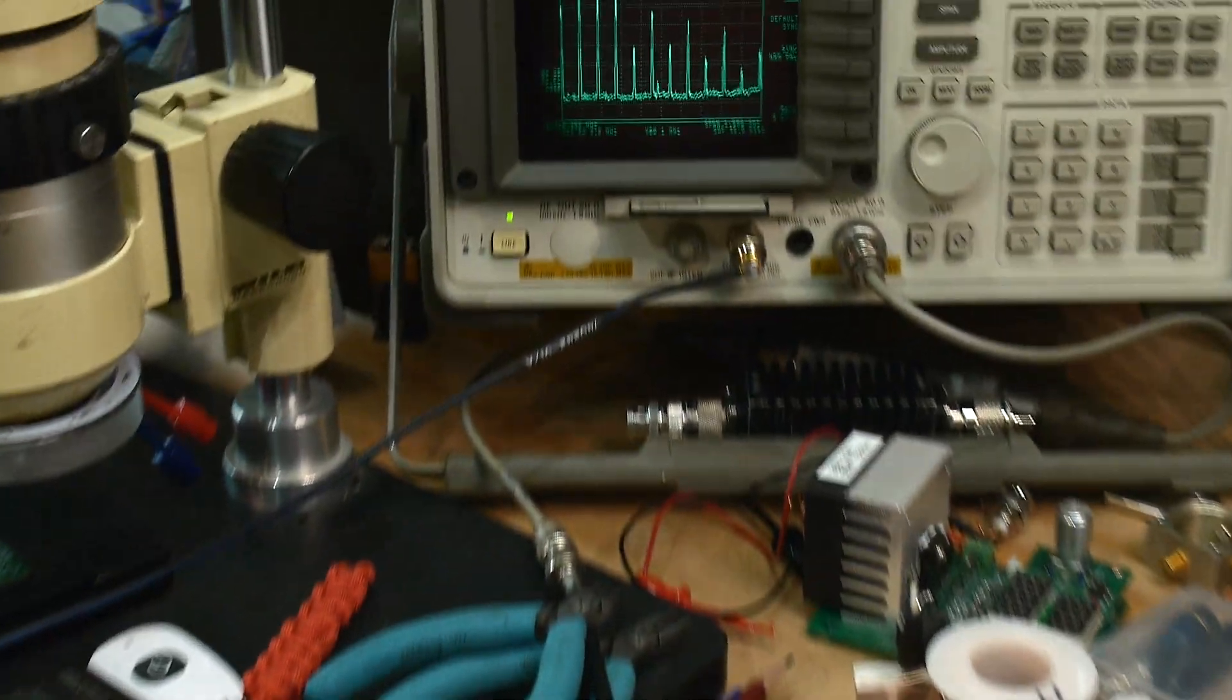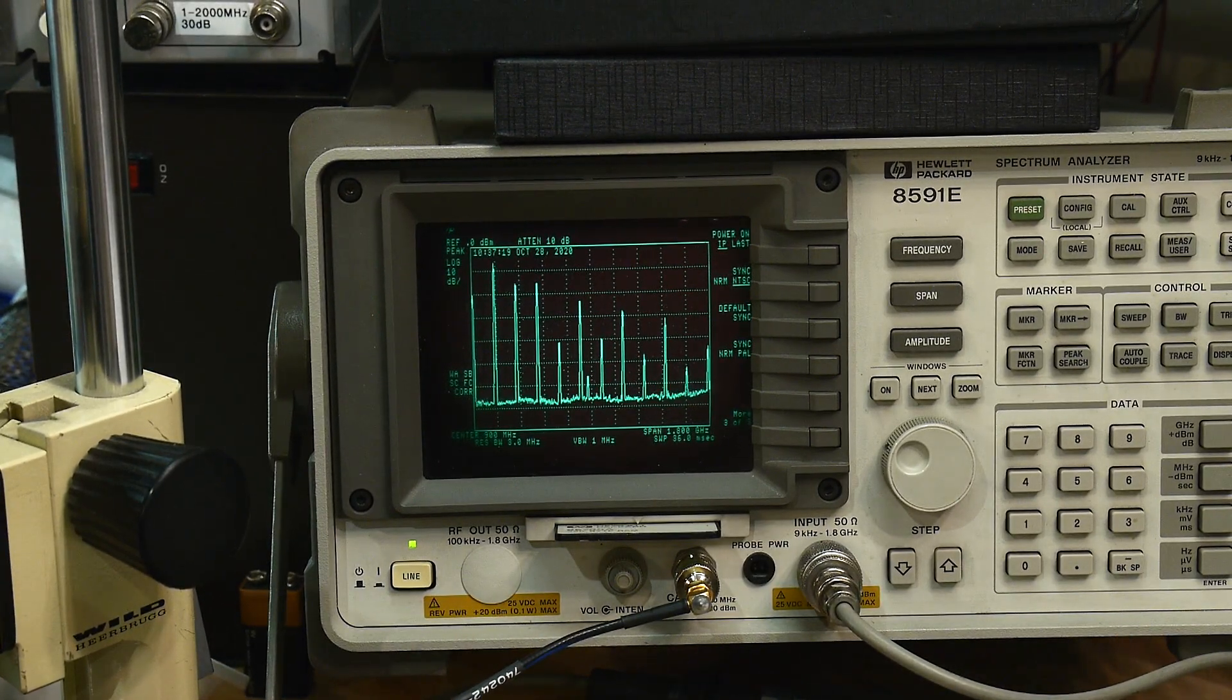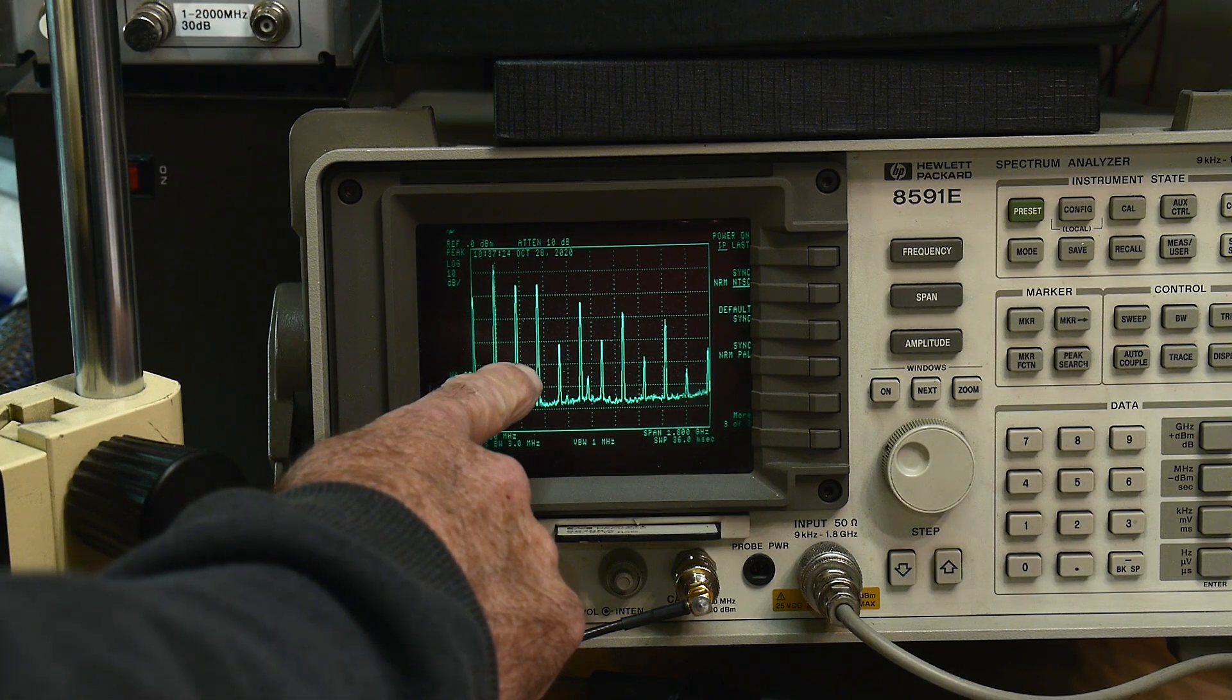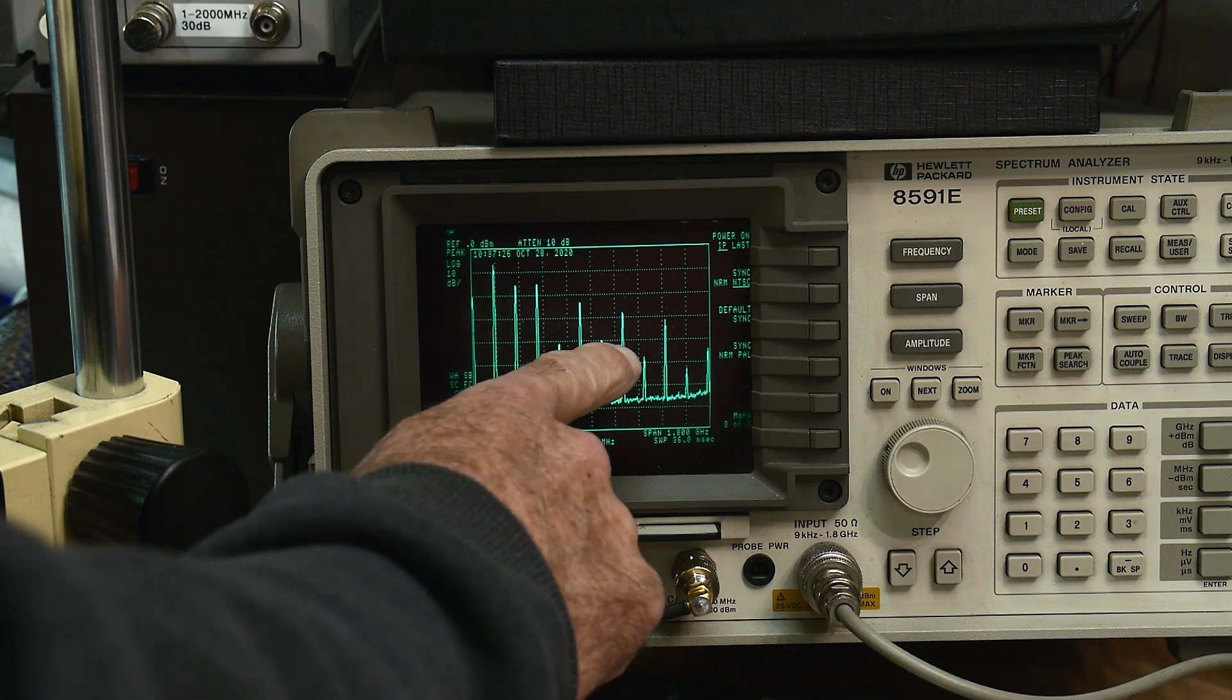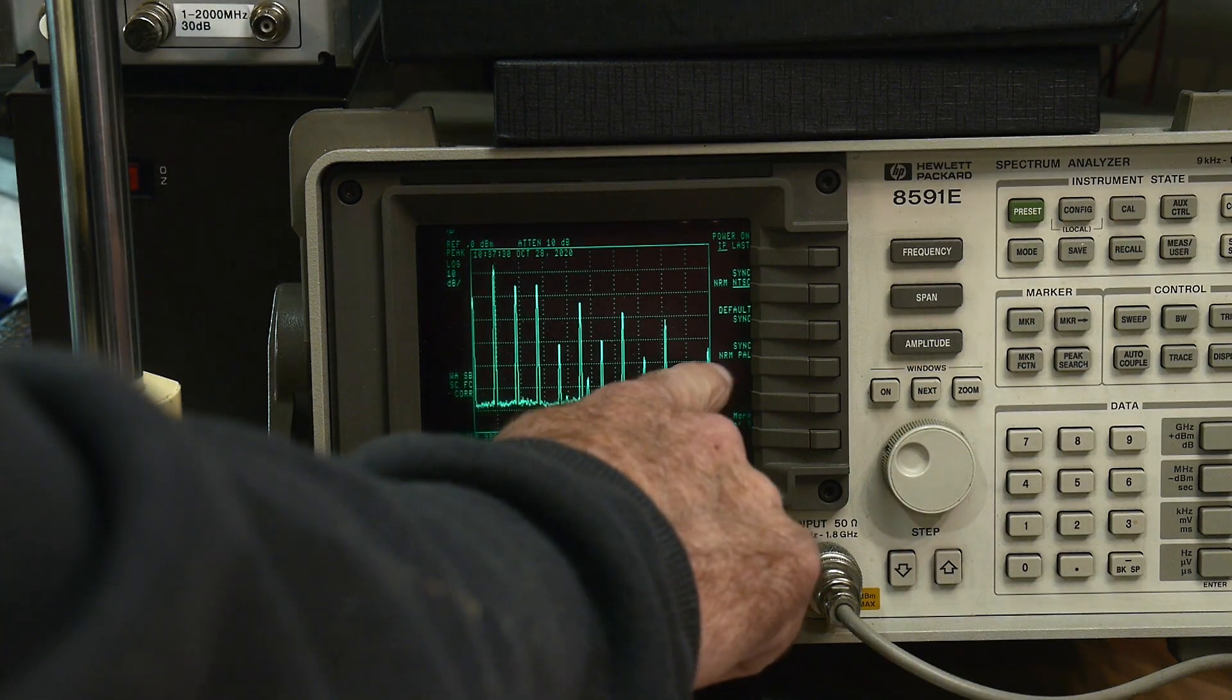So anyway, so here it is. So I think it looks very reasonable. This is the carrier. 2nd, 3rd, 4th, 5th, 6th, 7th, 8th, 9th, 10th. Harmonics goes way out. This is 1.8 gigahertz.